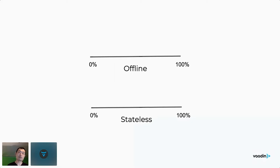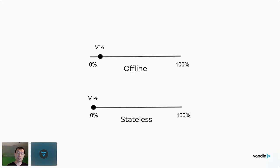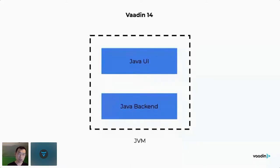For offline, starting with the PWA annotation we can offer an offline page for free, but you don't get anything else out of the box. Regarding stateless, Vaadin is fundamentally built on the philosophy that UI state is stored on the server side in the JVM. For the past 20 years, Vaadin has been doing one thing well: connecting the web with Java. Everything is Java running in the JVM.